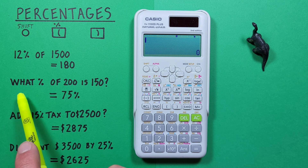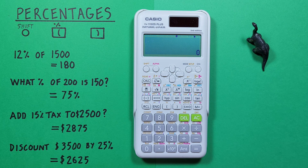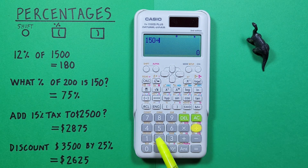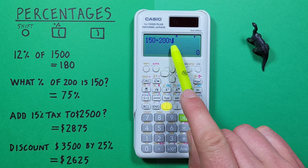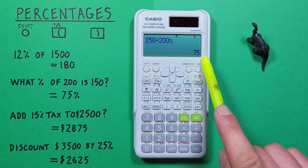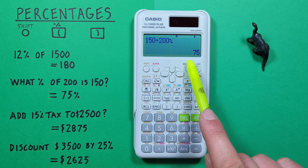What if we wanted to find what percent of 200 is 150? Let's say we wrote a test and got 150 correct answers out of a possible 200. To do this we start by entering the 150 and then press divided by 200, and then press shift left bracket to get the percentage symbol and press equals. We get 75, so 150 out of 200 is 75%.